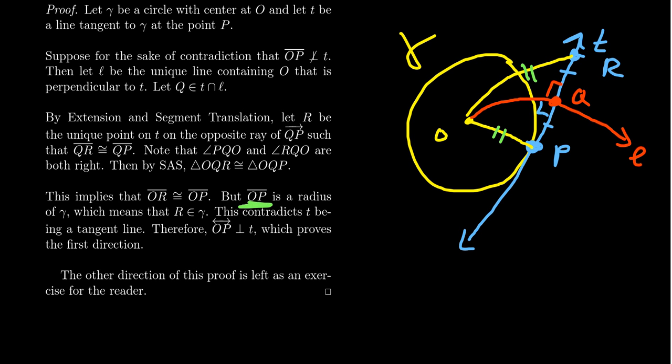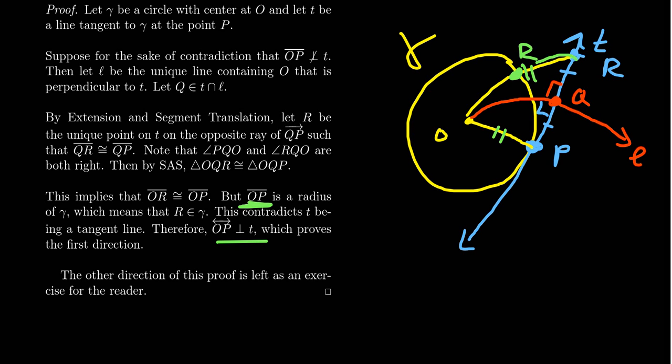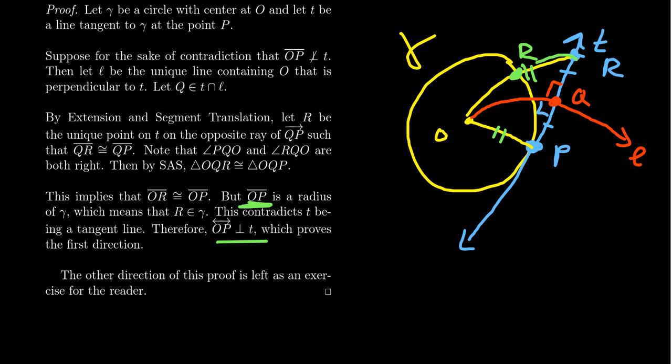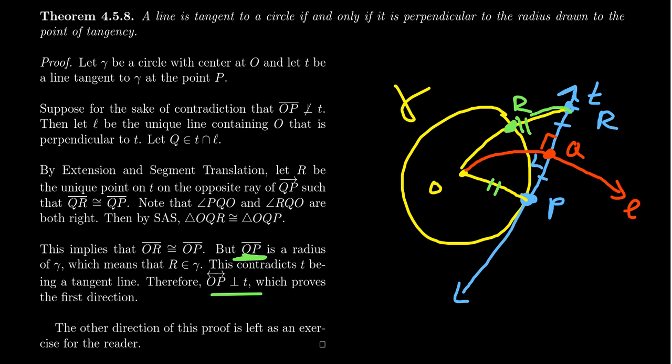But hold your horses there for a second. OP is a radius of the circle. OK, if that's a radius of the circle, that means that OR, it would have to also be a radius of the circle. In particular, that would distort our picture so that really R is this point right here. OK, in which case R is on the circle, P is on the circle. But that means this isn't a tangent line because I have now two points of intersection. T was really a secant line, not a tangent line. And that gives us our contradiction. So therefore, the line OP is perpendicular to line T. And so tangent lines are always perpendicular to their radius.